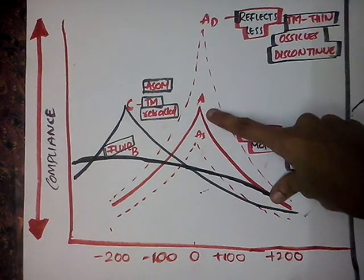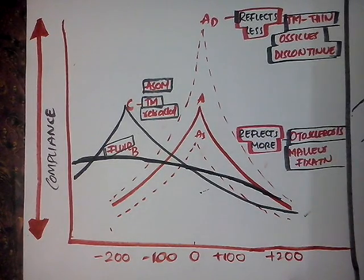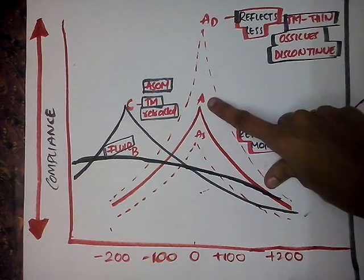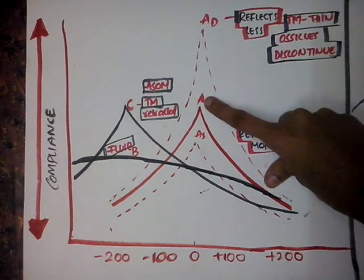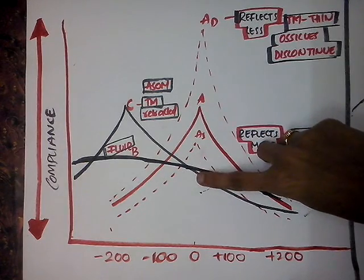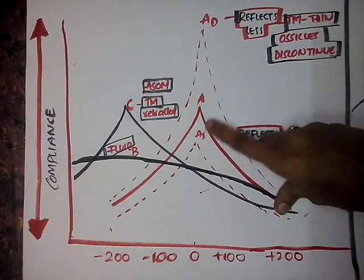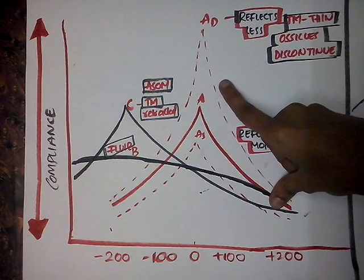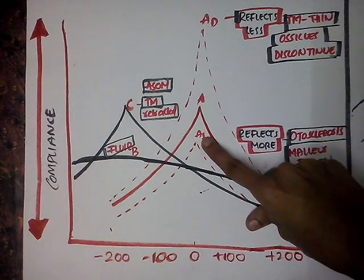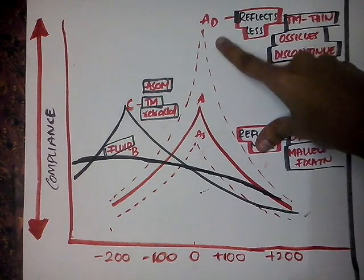This is the normal tympanogram — normal tympanogram with maximum compliance of the tympanic membrane, where the pressure in the middle ear and atmospheric pressure are the same. AS, where S stands for shallow, and AD, where D stands for deep curve.